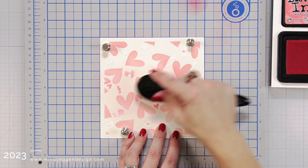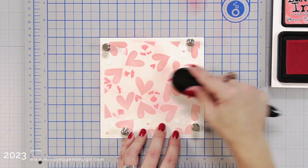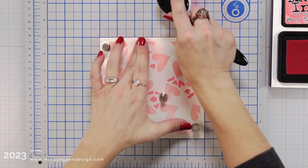So this is layer 2. It's going to add some detail in between the hearts and I'm applying this with the blending brush and worn lipstick.